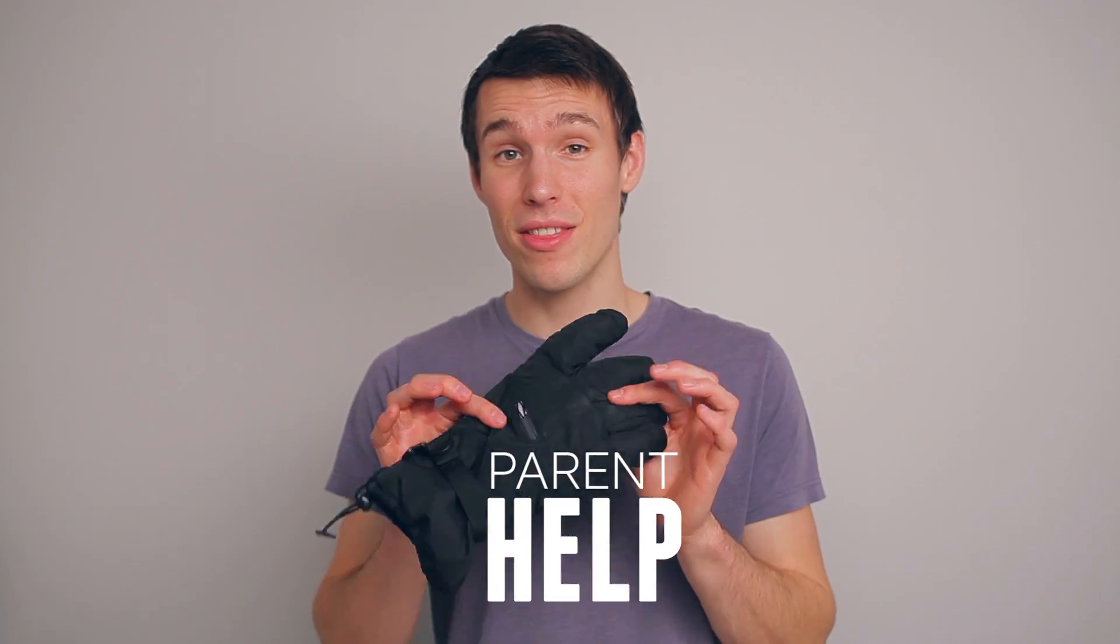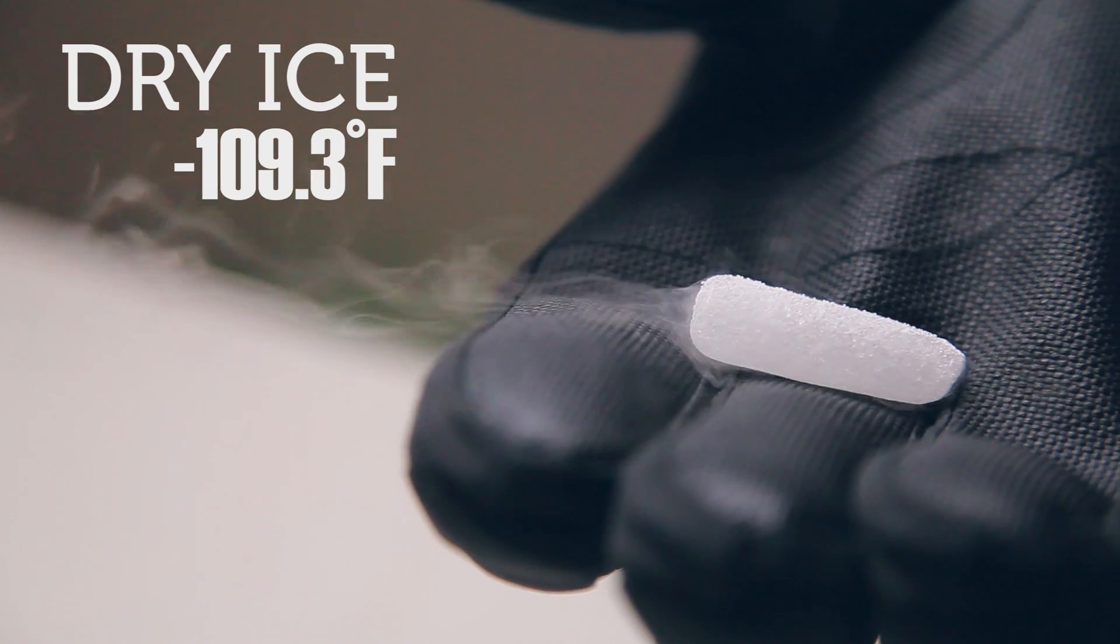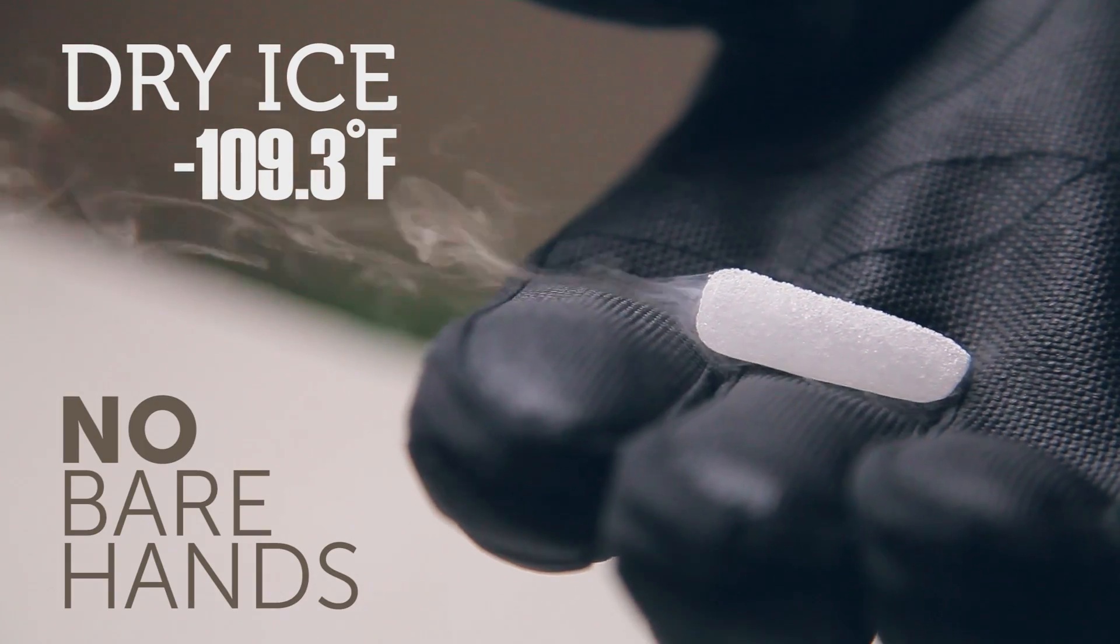And a glove to handle your dry ice. Make sure you have parent help and a thick glove when you're handling your dry ice. Dry ice is negative 109.3 degrees, which means you don't want to touch it with your bare hands.